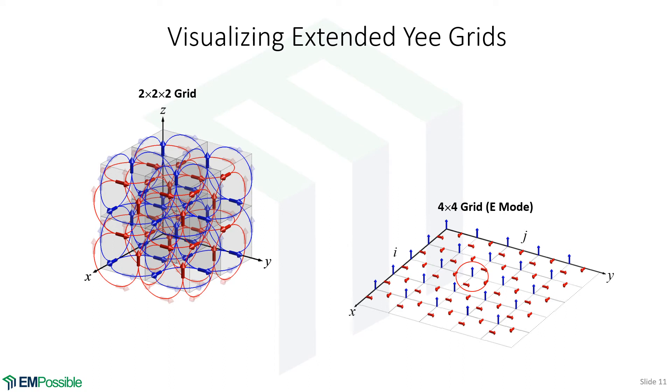Here, I'm just trying to visualize larger grids. Here's a 2x2x2 grid with all the curls circulating around the other field components, and that's confusing and really hard to see. A little bit easier to see on a two-dimensional grid: if we're sitting at an electric field here, we can see the magnetic fields we need to calculate curl are right adjacent to it.